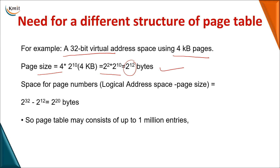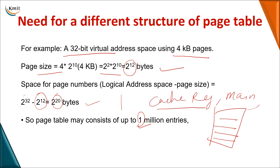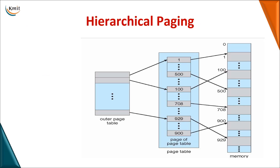The logical address is 32-bit, so the virtual address space is 2^32. Dividing by the page size of 2^12 gives 2^20 — that's 1 million entries in the page table. Whether you maintain the page table in registers, main memory, or cache, storing 1 million entries is not feasible. So we go for different structures.